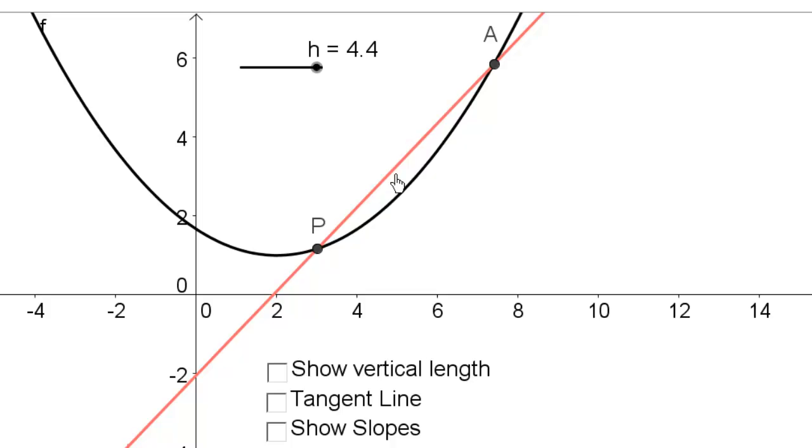Now before we move on, I just want to do a quick demonstration of what I mean about a limit of a slope of secant lines. So I have these two points here, P and A. Now I want to find the slope at P. So ignore all this notation here in this terminology because we haven't done that yet. But this blue line right here actually shows me the slope at P.